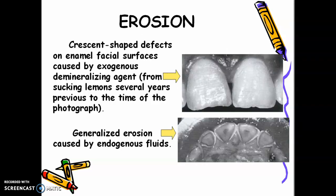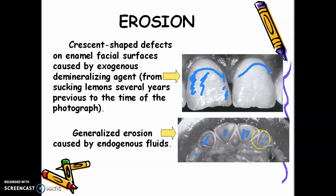Erosion presents as a crescent-shaped defect on the enamel facial surface. You can see here that the enamel has become thinner. Also look at the lingual surface of the maxillary anterior teeth. Before you do any restoration, you must eliminate the cause. If the cause is bulimia or frequent vomiting, you have to find a solution to that first. If the patient likes to drink lemonade or suck lemons, that habit must be gradually removed before restoration.